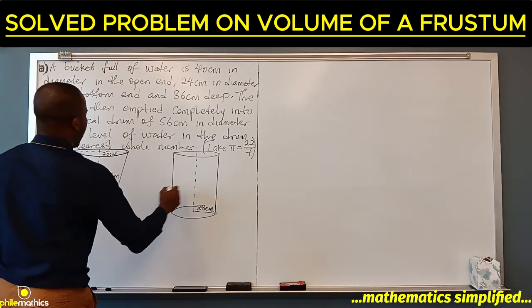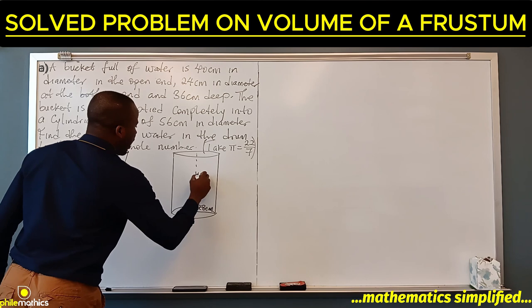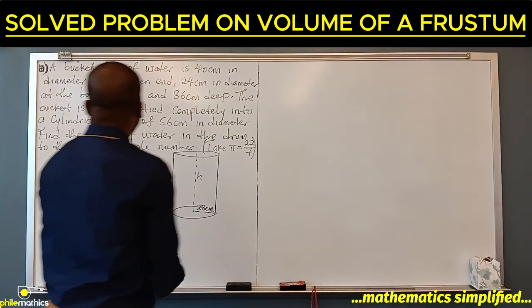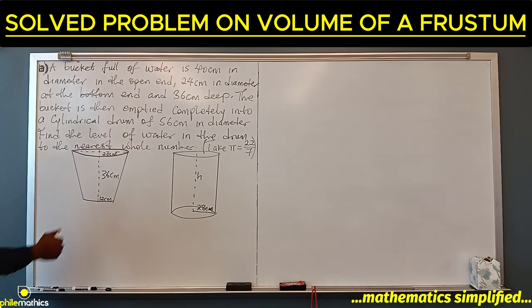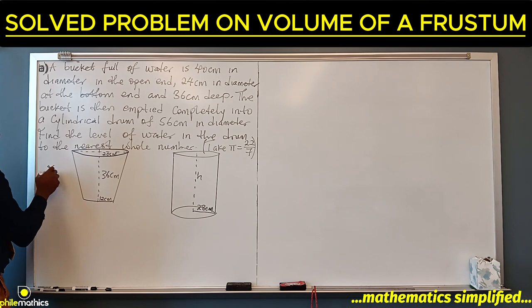We are asked to look for the level of water in the drum, which is simply the height of the water inside this drum. So the first thing we will look at is to find the volume of water inside this frustum. This is a frustum and this is a cylinder.